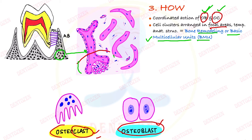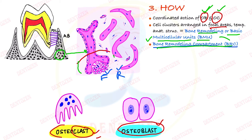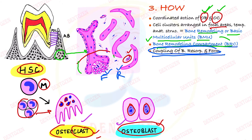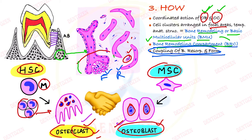The leading edge of the BMU is formed by osteoclast cells, which resorb bone first, followed by osteoblast cells forming the tail to deposit new bone. This is called the bone remodeling compartment, and the simultaneous occurrence of formation and resorption is called the coupling mechanism of bone remodeling. Osteoclasts derive from hematopoietic stem cells — monocytes are their precursors, fusing to form large multinucleated osteoclasts. Osteoblasts are single-nucleated cells derived from mesenchymal stem cells.